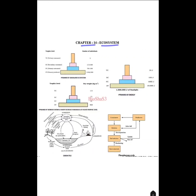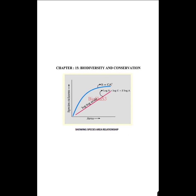From Chapter 14, Ecosystem: you have to show the pyramid of a grassland ecosystem — pyramid of energy and the pyramid of biomass — direct questions for diagrams. Then the carbon cycle and phosphorus cycle — once again schematic representations. From Chapter 15, Biodiversity and Conservation: the species-area relationship — on the x-axis area is given, on the y-axis species richness is shown, and you have to mention the equation properly.